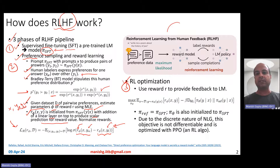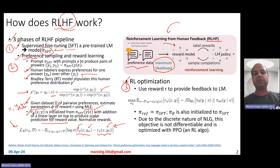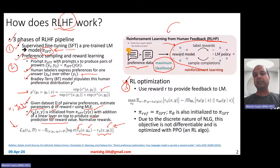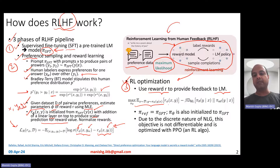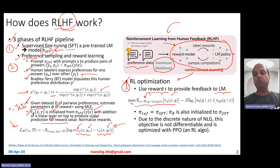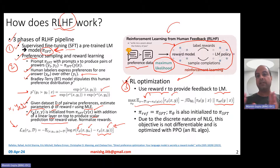The broad idea in RLHF is that you take preference data and use maximum likelihood estimation to train a reward model. This reward model is then used to update your policy. You want to maximize reward while ensuring the KL divergence between the model being trained (PI-Theta) and the original PI-SFT reference model remains small, so the model does not drift far away from its original starting point.